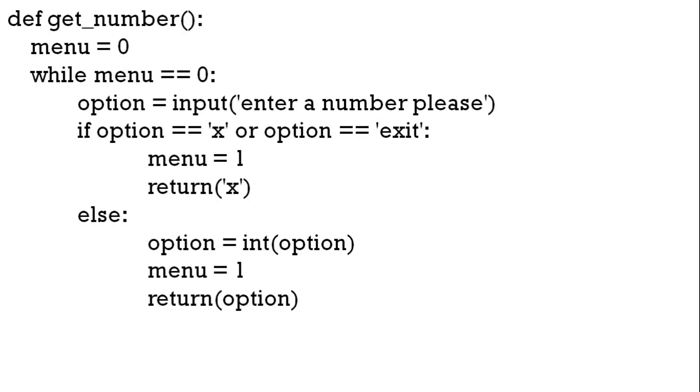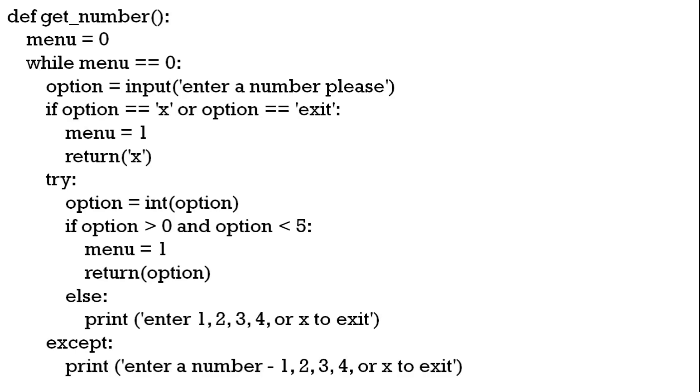We want to use a function. So here we just get a number from the user. They enter either a numbers one to four or X or exit to finish. So we need to add error handling. So here we've got the option, it's going to be between zero and five, it's going to be one two three four. If it's not we're going to tell the user to print either one two three four or to exit.